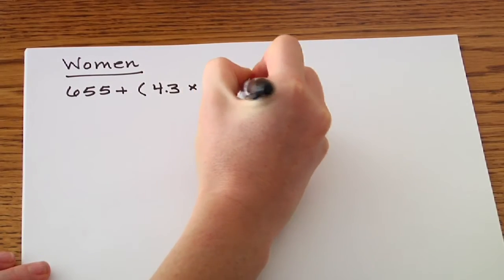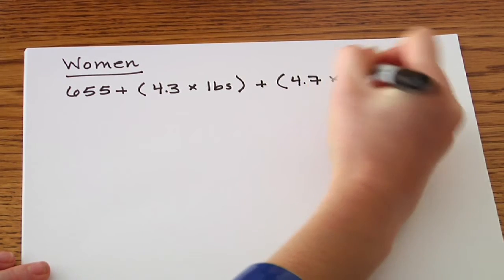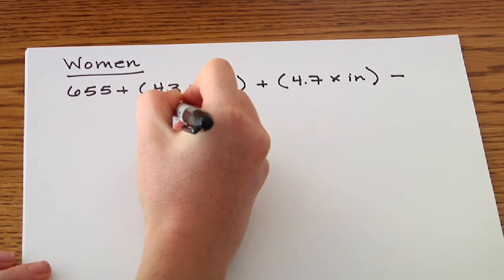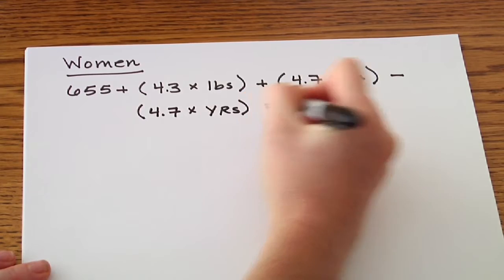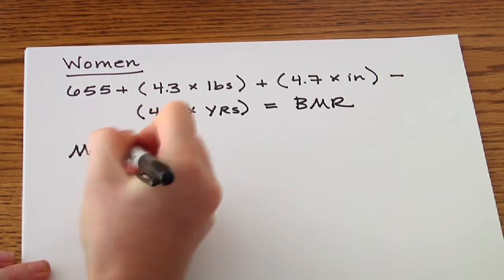For women you take 655 plus your weight in pounds times 4.3 plus your height in inches times 4.7 minus your age in years times 4.7 and that will equal your BMR.